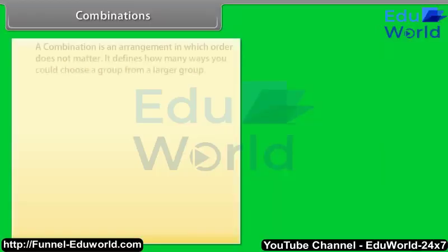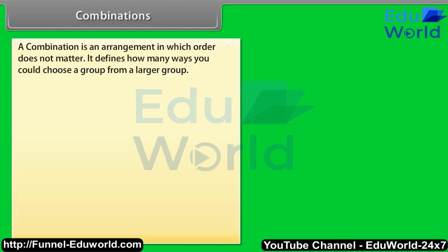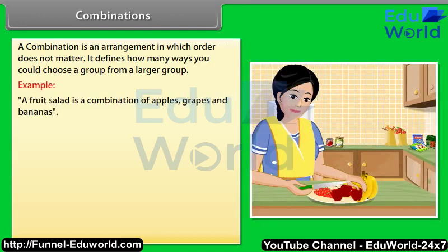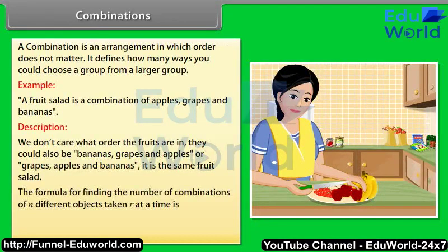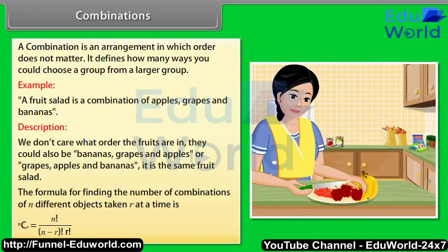Combinations. A combination is an arrangement in which order does not matter; it defines how many ways you could choose a group from a larger group. For example, a fruit salad is a combination of apples, grapes, and bananas — we don't care about the order. The formula for the number of combinations of N different objects taken R at a time is NCR = N! / ((N−R)! × R!).